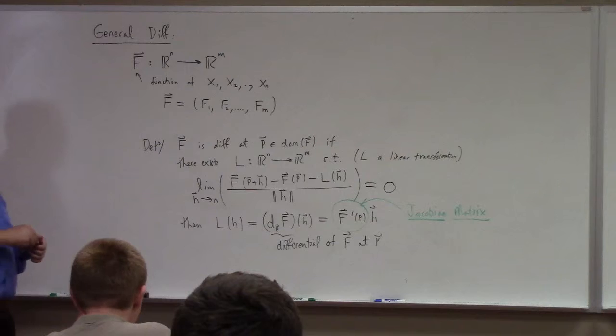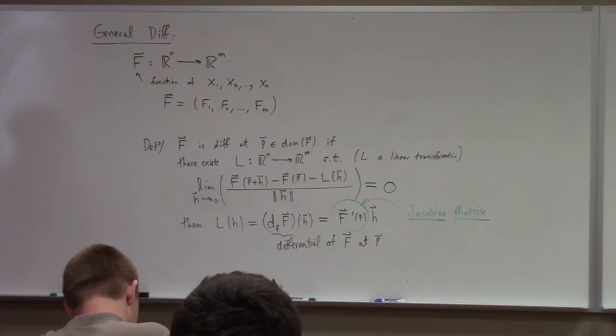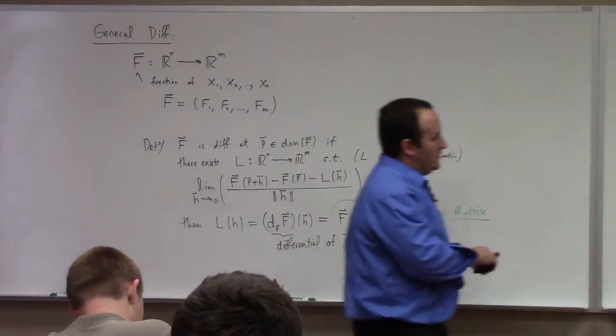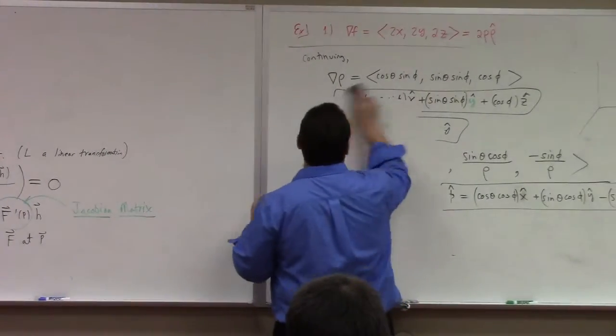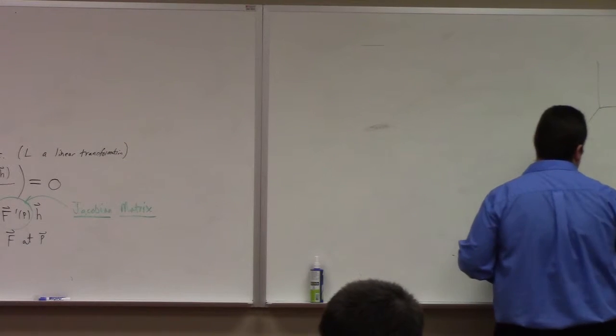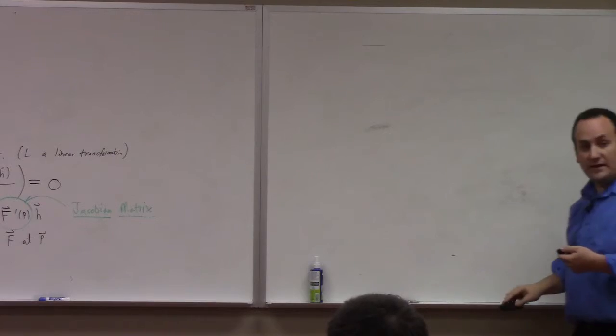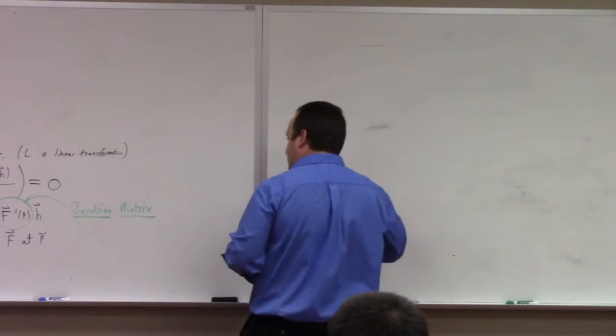That's a matrix multiplication. This f prime of p is a so-called Jacobian matrix. So what's this limit say? It says that you can approximate the change in the function. What's the change in the function? It would be f of p plus h minus f of p. That's the change in the function. That can be approximated by this linearization, provided that we're sufficiently close to the limit point. This is linearization idea again. And so, long story short, you can use the Jacobian matrix to build the best linear approximation to functions of several variables in the same way that you guys have built the best linear approximation to a tangent line using the velocity vector.